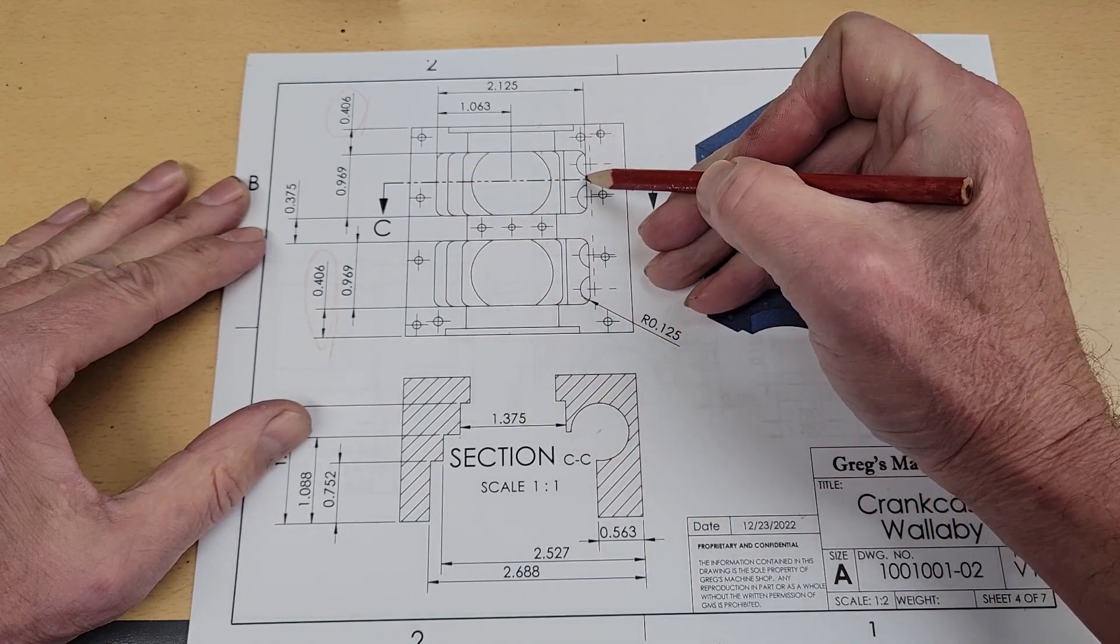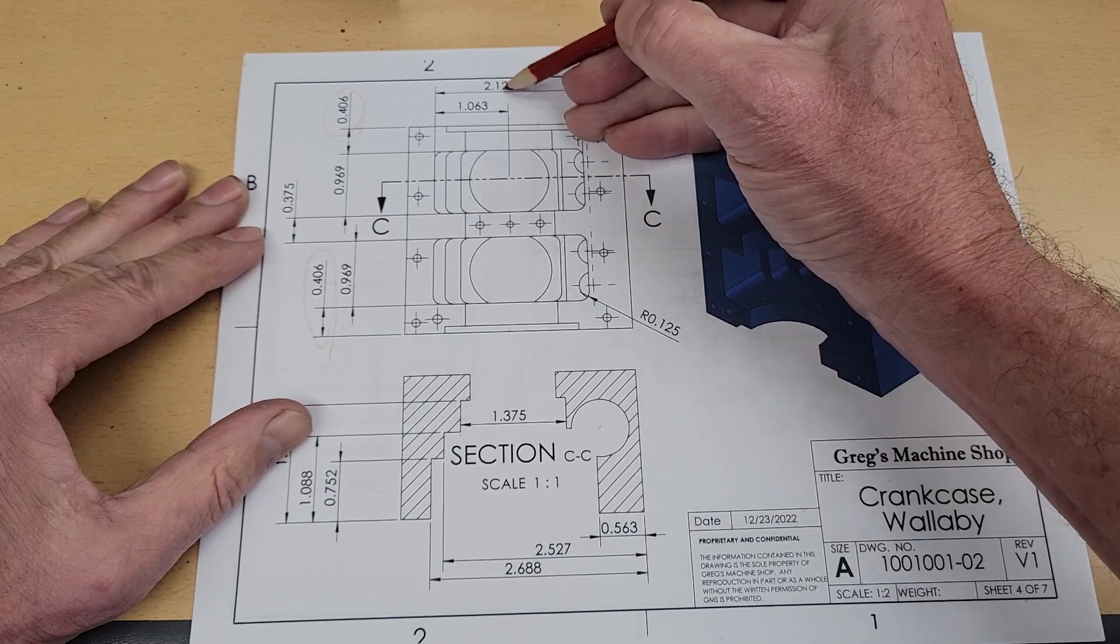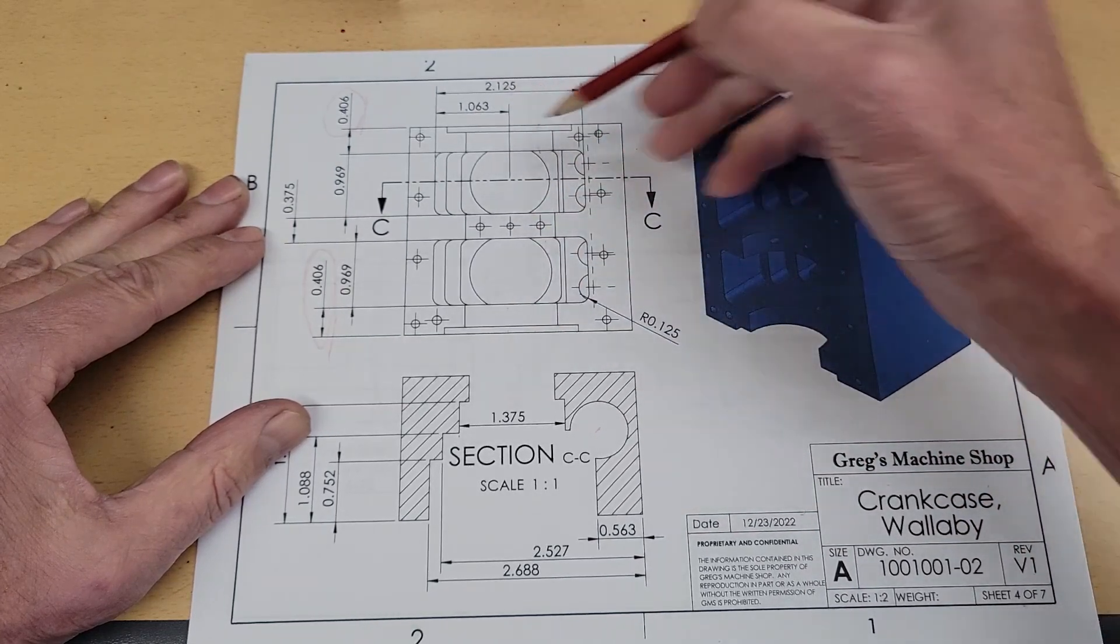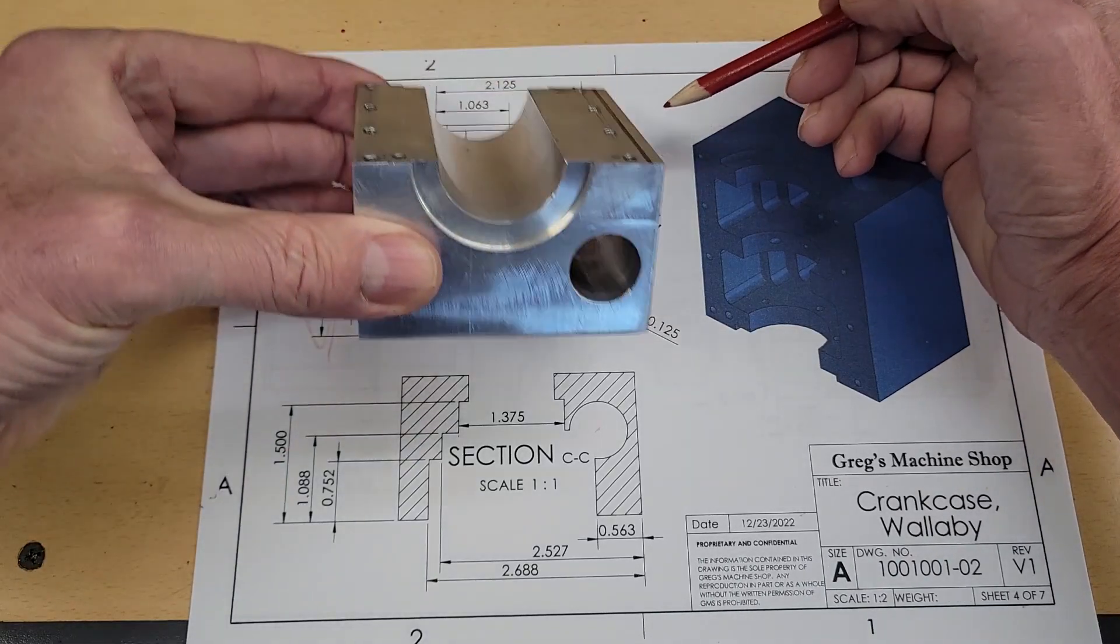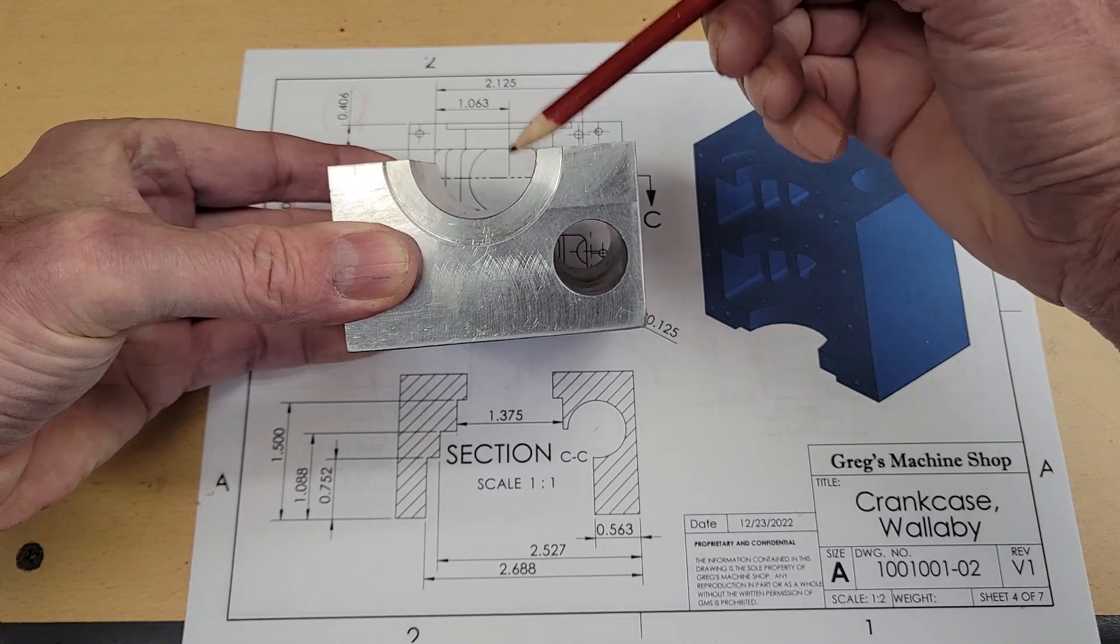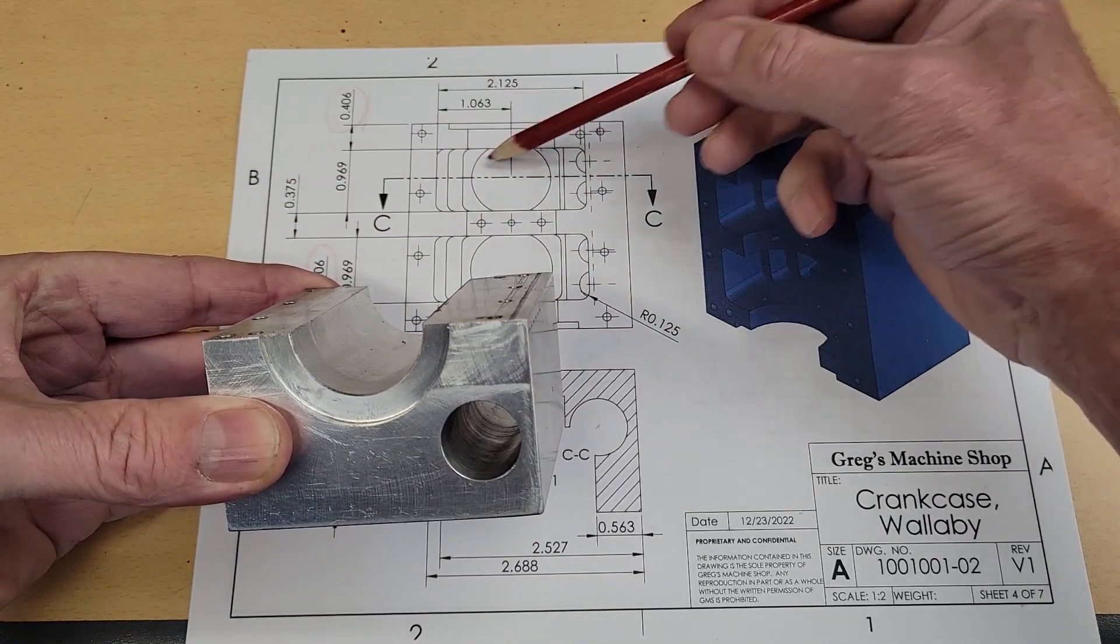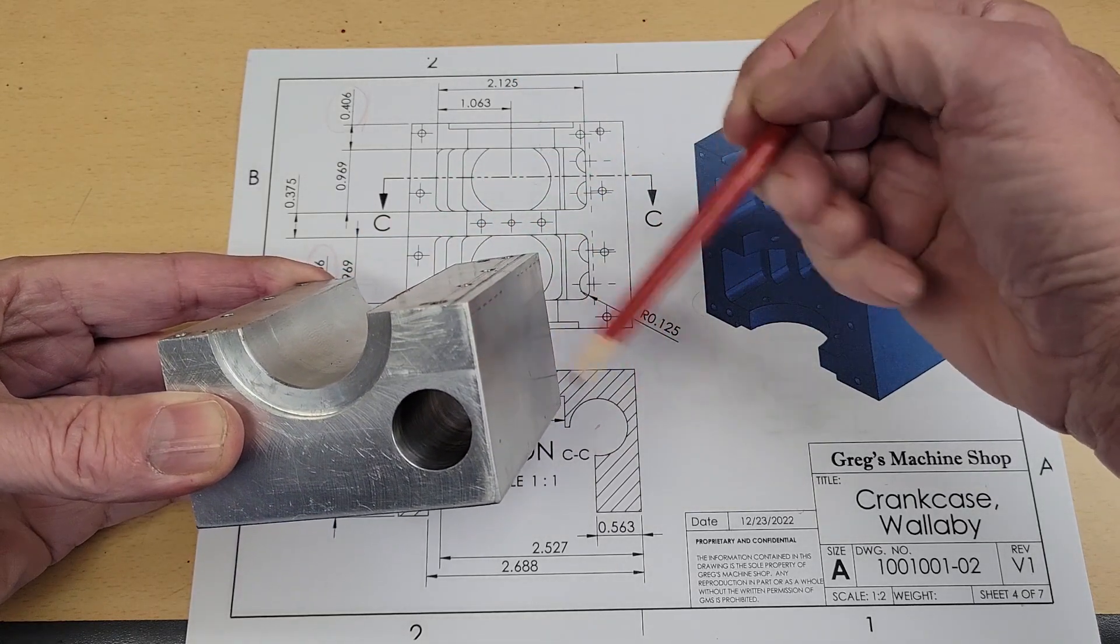Side-to-side, each of these pockets are 2 1⁄8 of an inch. And note that they're centered on the crankshaft. They are not centered on the crankcase side-to-side. Our crankshaft bore, of course, is offset. And these features are centered on the crankshaft bore, not the crankcase.